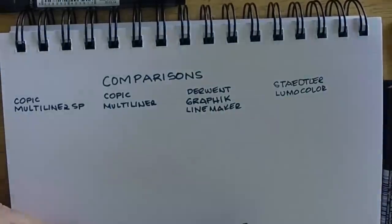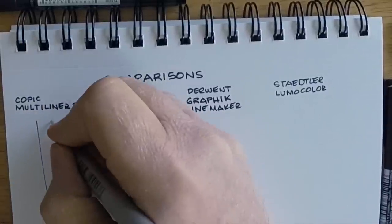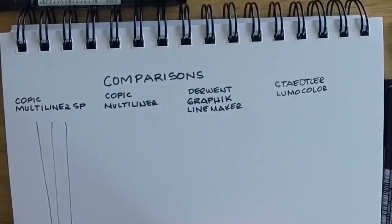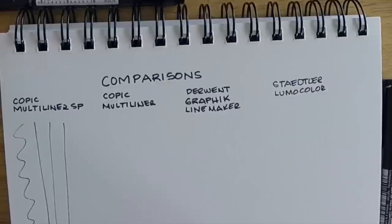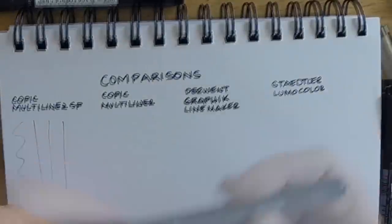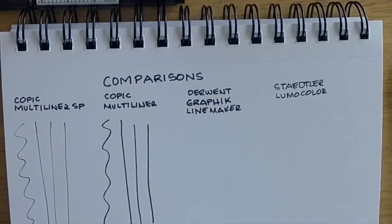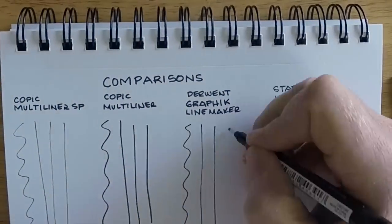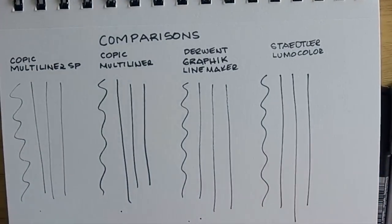So let's just do a little side-by-side comparison. I'm going to draw fairly quickly because I want to see if the ink flow is there. You can see on the Copic Multiliner SP here there's some skipping, so the ink essentially is not flowing to the bottom as quickly as I'd like. With the others, the Copic Multiliner is really good, the Derwent maybe not so much, and the Staedtler didn't do too bad.